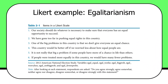One of the big problems in this country is that we don't give everyone an equal chance — that's measured in an egalitarian direction. This country would be better off if we worried less about how equal people are. Imagine coding these all in an egalitarian direction, from one to five, and then summing all those — you'd get a scale that would run from five at the low end to 30 at the high end, and you get a very nice ordinal measure of egalitarianism.